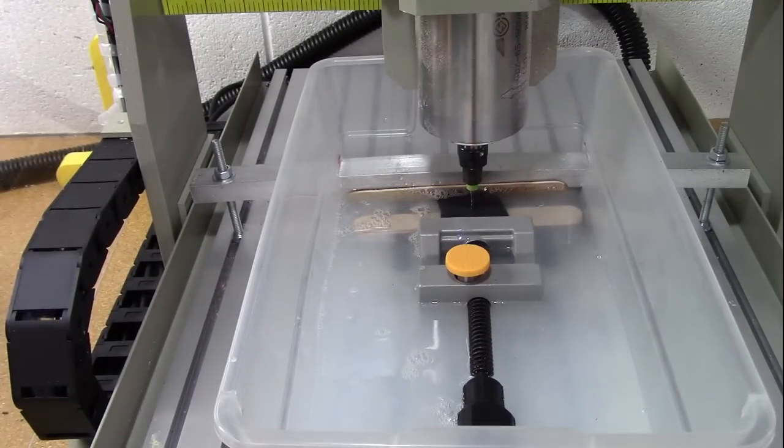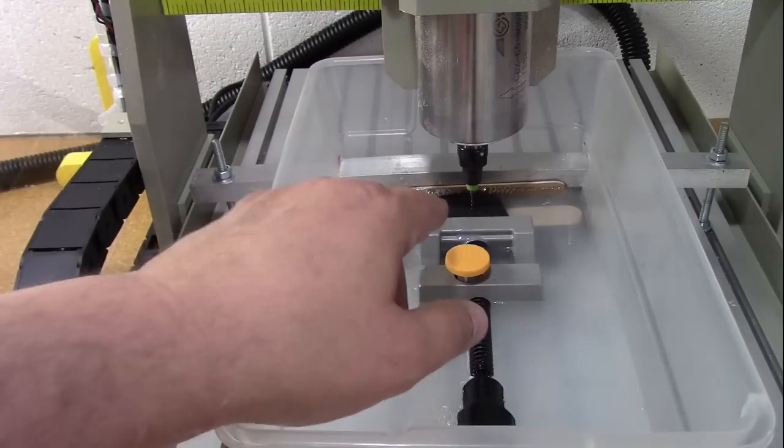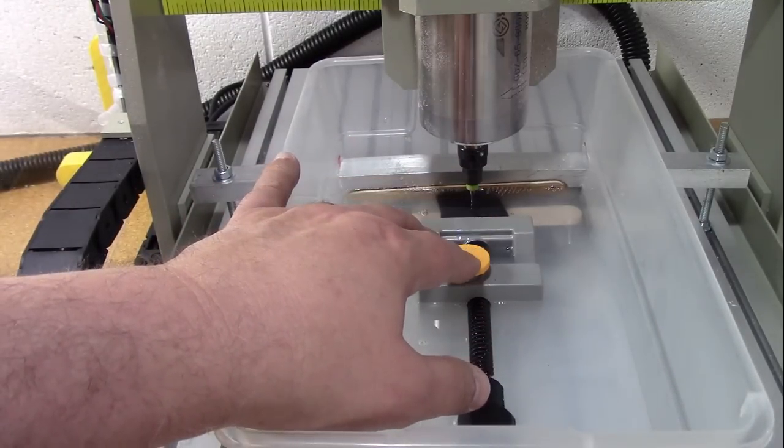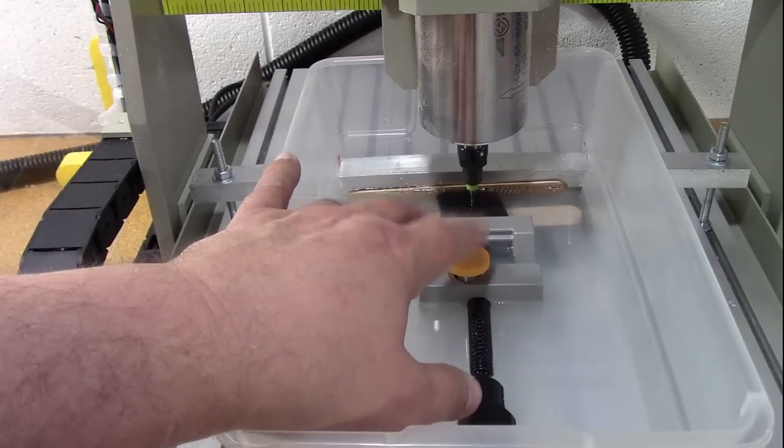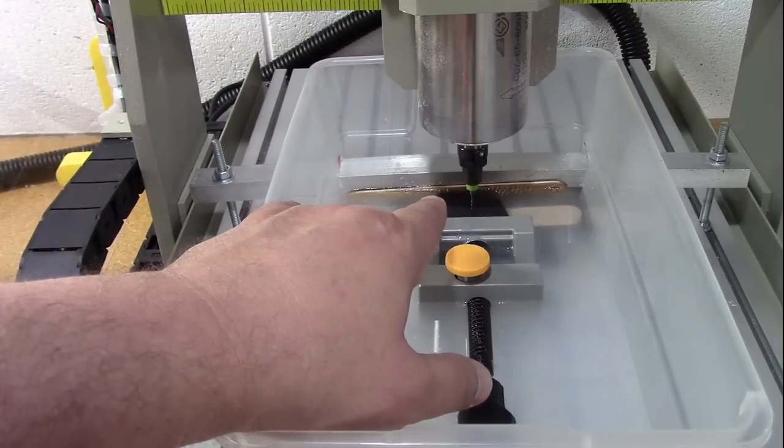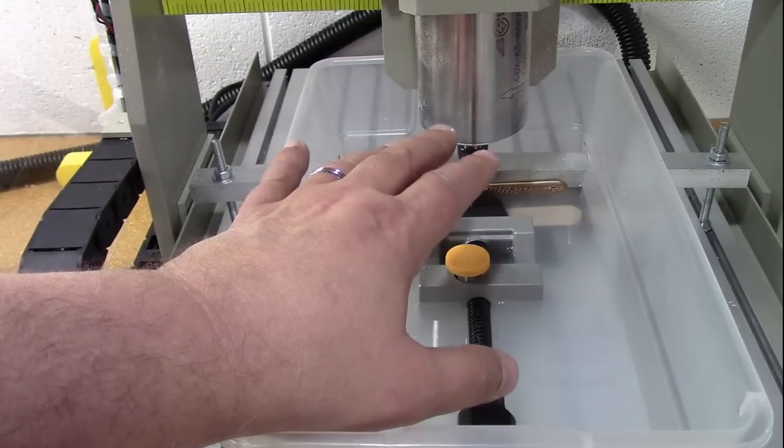I'm going to use the same type of bit that I've used for the glass and see how that works. I've also got some diamond bits. I want to give this a shot. Now I've got the machine centered and aligned and everything else.